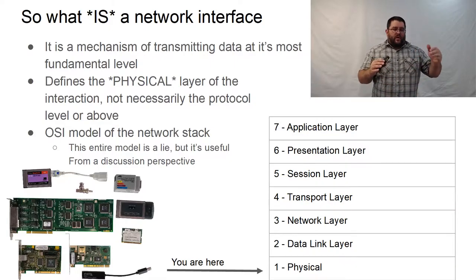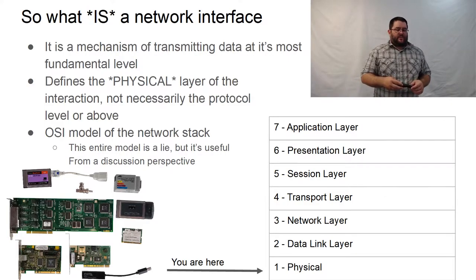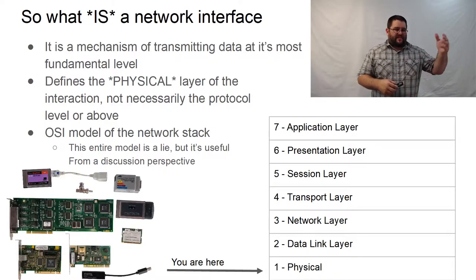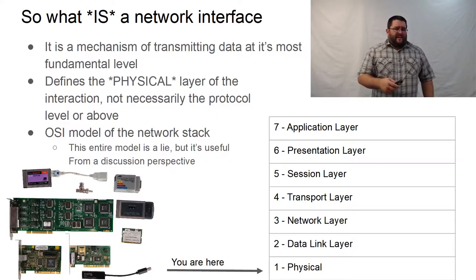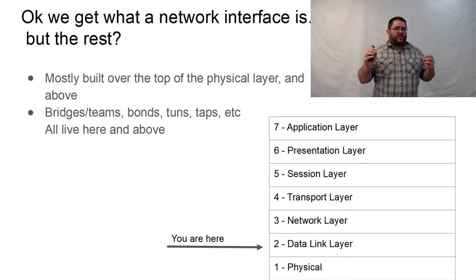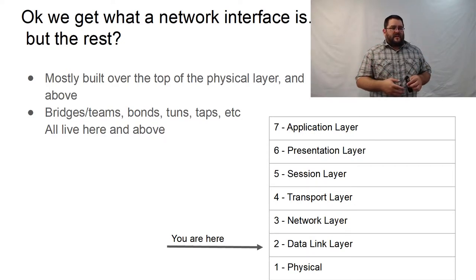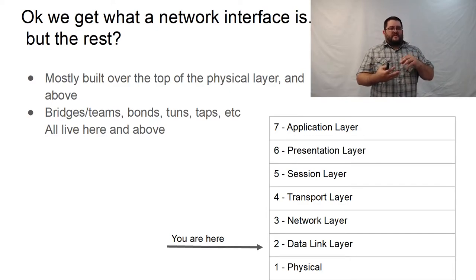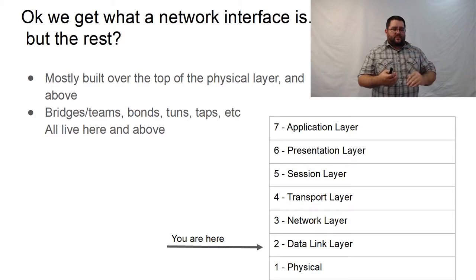I've rummaged through my own drawer of networking cards and pulled out a bunch that people can see here — everything from PCMCIA network adapters through Wi-Fi adapters, Token Ring, and all kinds of bits and pieces. If you've been around the hardware world long enough, some of these will look familiar. Things like bridges, bonds, taps, and tunnels don't really make sense without some sort of lower-level physical interface underneath them. You can't have a bond without something to bond together, and a tunnel can't go anywhere if it has no physical layer to use.